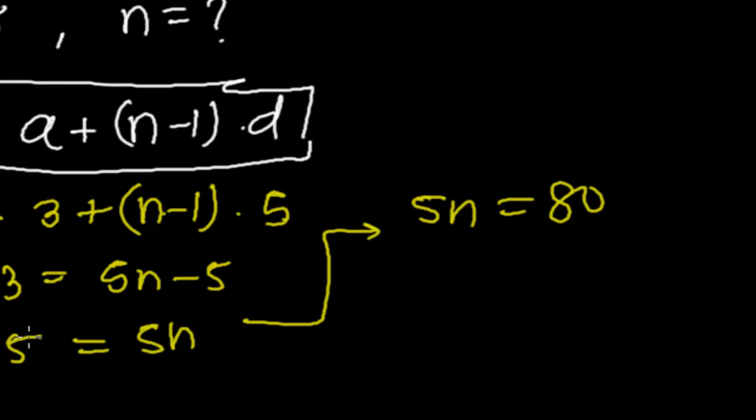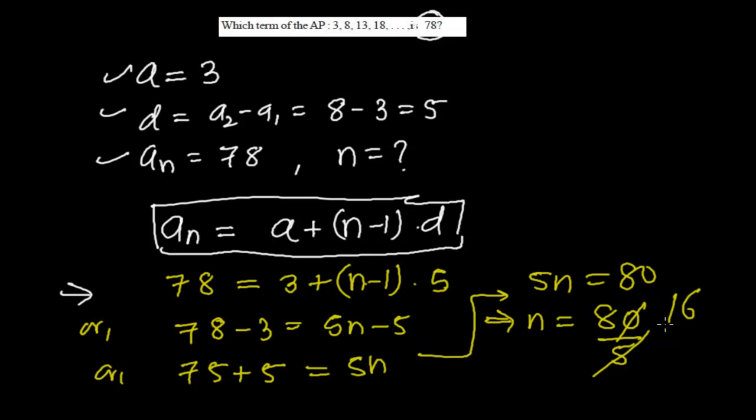5n equals to 80, or n equals to 80 divided by 5. Since this 5 is multiplying, it will be dividing. Therefore n equals to 16.